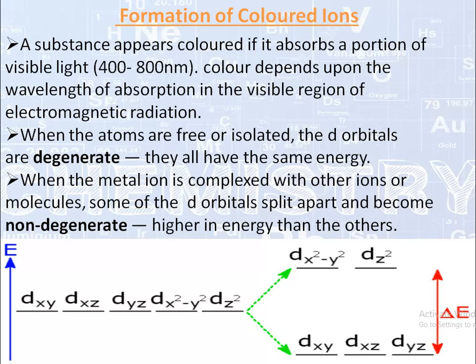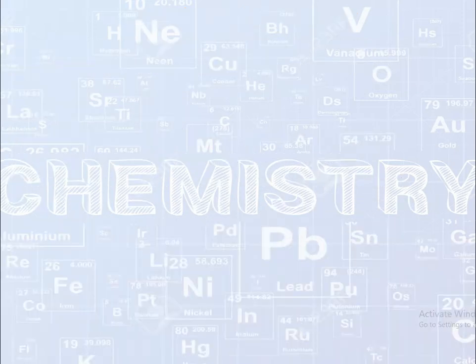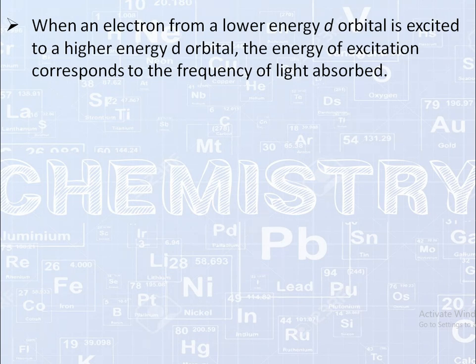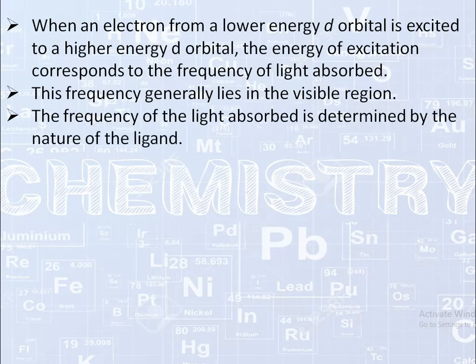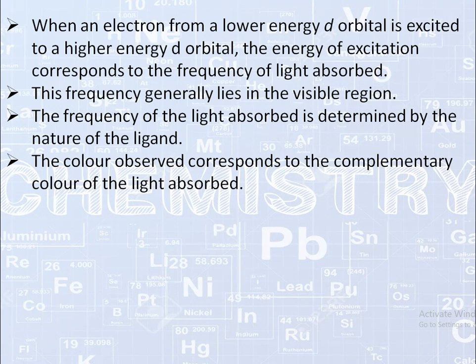The energy for this transition is available within the visible range. Therefore, transition metal ions absorb certain radiation from the visible region and appear colored. In short, when an electron from a lower energy d-orbital is excited to a higher energy d-orbital, the energy of excitation corresponds to the frequency of light absorbed. This frequency generally lies in the visible region, and the frequency of light absorbed is determined by the nature of the ligand.